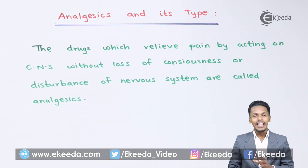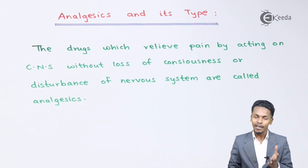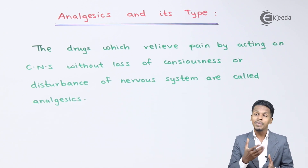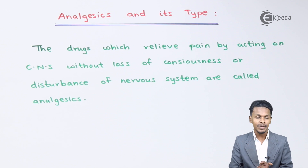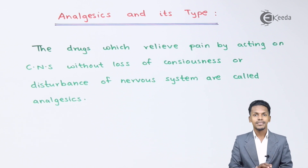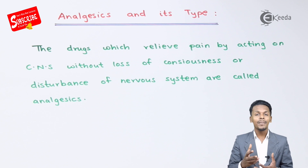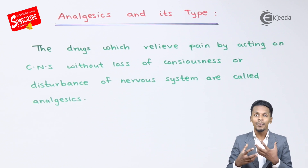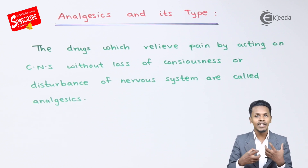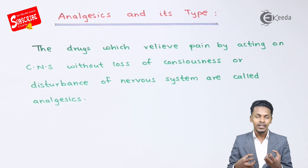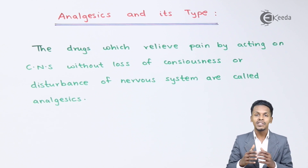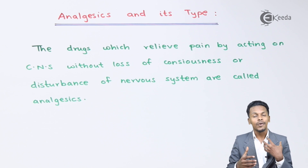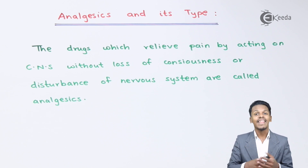Based on that, analgesic has different types. Analgesic is nothing but a painkiller. While taking this drug, pain is felt because of signals produced by the nerves through the central nervous system, and this drug prevents those signals from passing through the central nervous system.